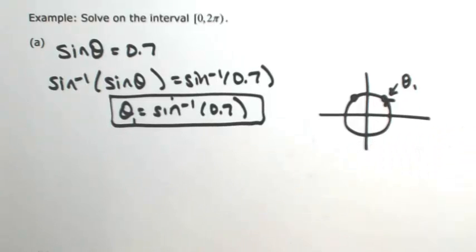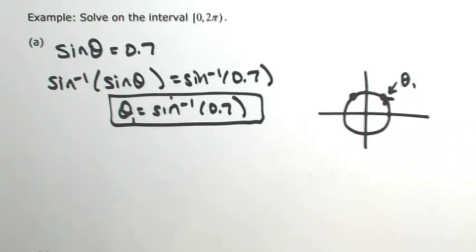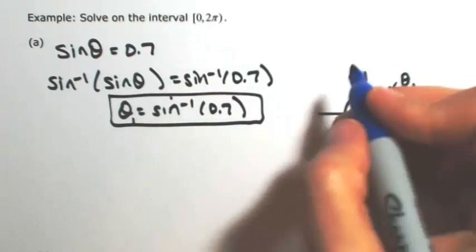So this angle is θ₁. What I need to do now is find what that other angle is. So I need to find what is θ₂.